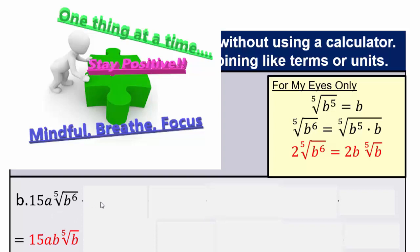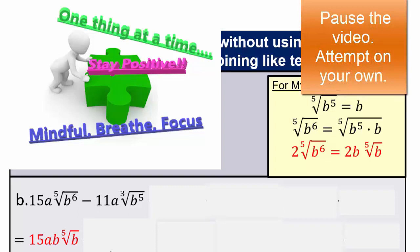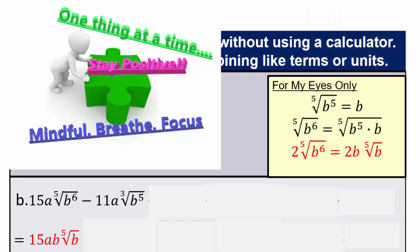Let's take a look at our second term. Can you pause the video and see if you can simplify just that part, because now we have cube root. Just like the fifth root, with cube root, b to the third will come out as one b. So we have 11a, a b because b to the third came out as a b escaped the cube root, but two b's — b squared — were left on the inside.